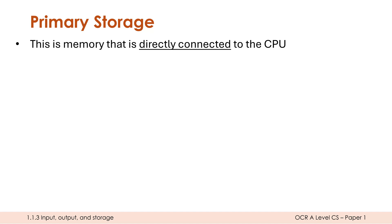Typically the word memory implies something quite short-term. So cache is quite short-term, registers are quite short-term, and RAM is quite short-term. Typically the word storage implies longer-term — we're thinking more like hard drives and SSDs, which we'll come on to look at. But if you're wanting a really tight distinction between storage and memory, you're not going to get it unfortunately.